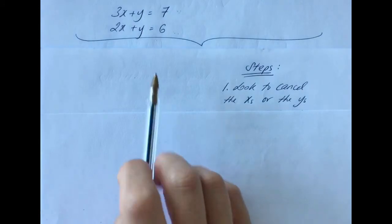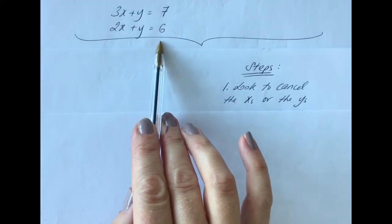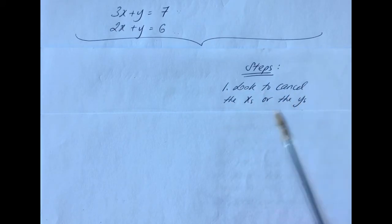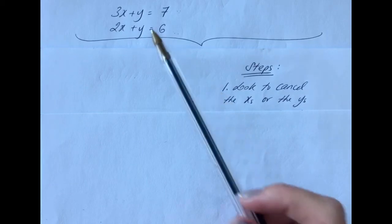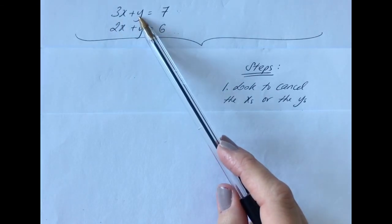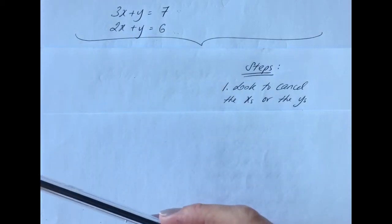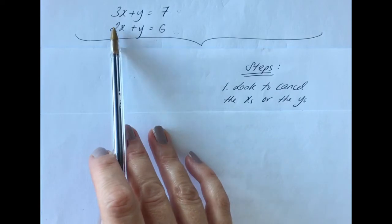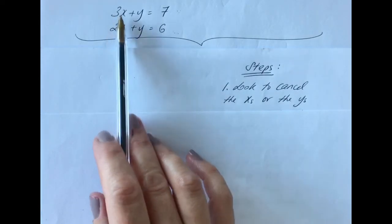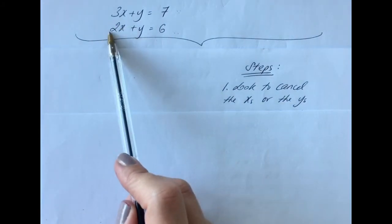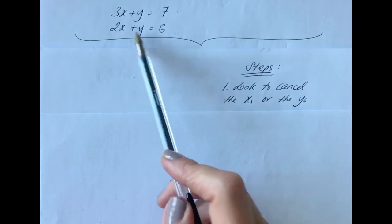Back to the original example: 3x + y = 7 and 2x + y = 6. Step one is to decide whether to cancel the x's or the y's. We have 3x and 2x, and we have +1y and +1y. For terms to cancel you need the same amount and one positive, one negative. We have a 3x here so ideally we'd need a minus 3x; a plus y here means we'd ideally want a minus y.